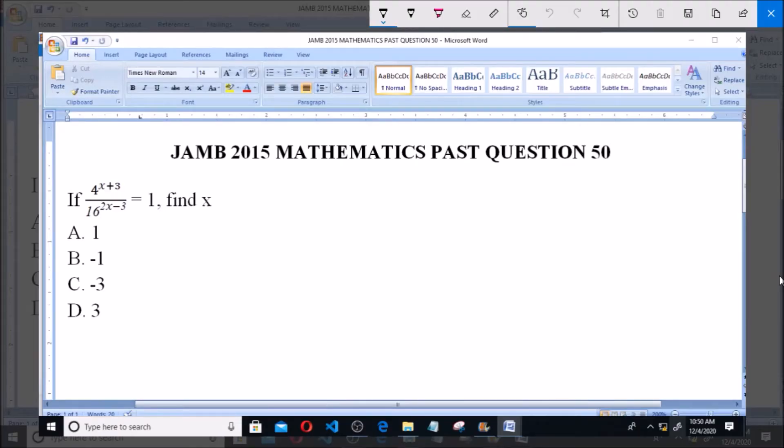Hello, good day and welcome. I'll be answering JAMB 2015 Mathematics past question 50. If 4 raised to the power of x plus 3, all over 16 raised to the power of 2x minus 3, is equal to 1, find x. The options are: A: 1, B: -1, C: -3, and D: 3.